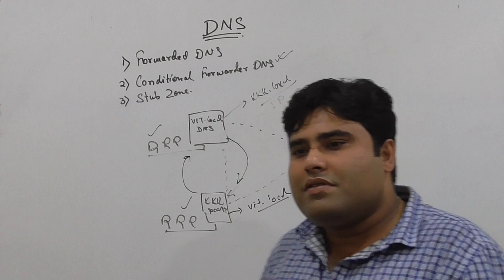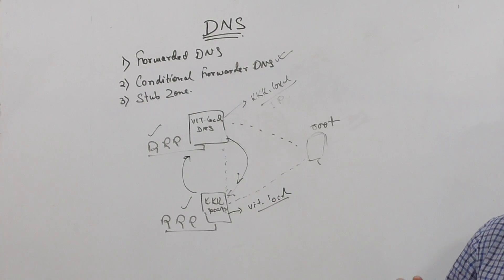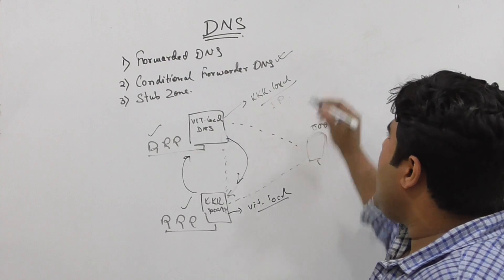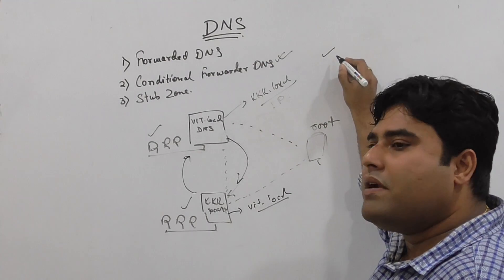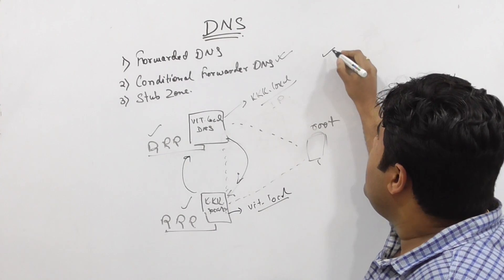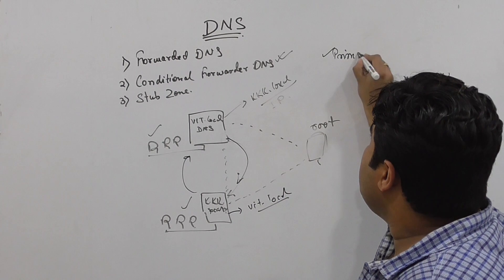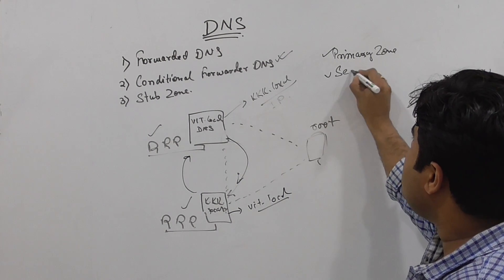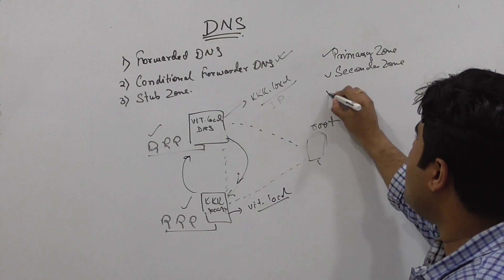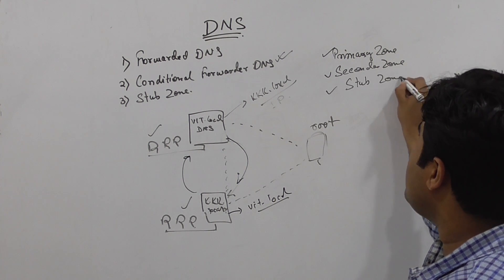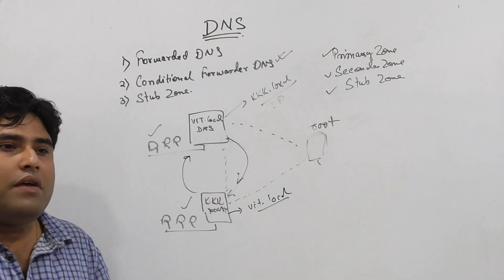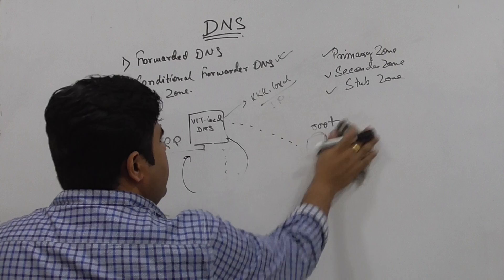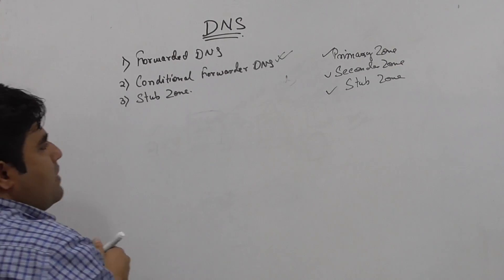Two separate organizations have separate infrastructure, and neither is registered on the internet, but they need to communicate with each other. Now the third option is the stub zone. The stub zone is similar to the conditional forwarder. The difference is: when you have one domain and want to make a connection to a different domain, the stub zone helps manage that without going through the root server.